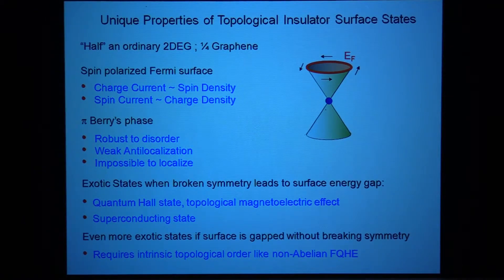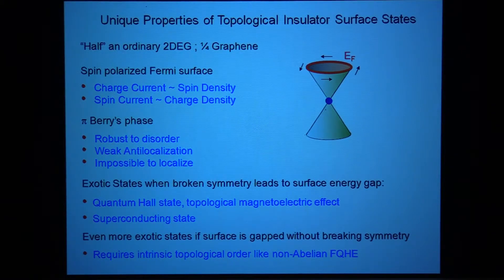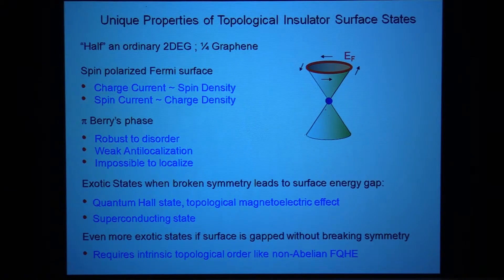Now I want to talk about the interesting things that can happen if you destroy the surface states. This degeneracy between the conduction band and the valence band is protected by time reversal symmetry. But you can ask: what happens if I break that symmetry?